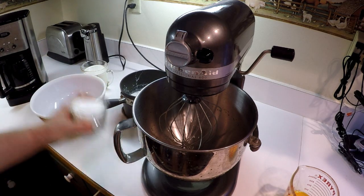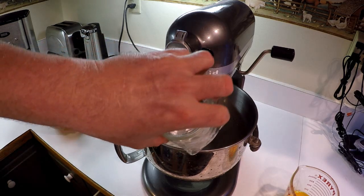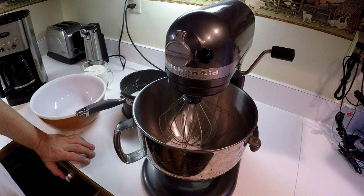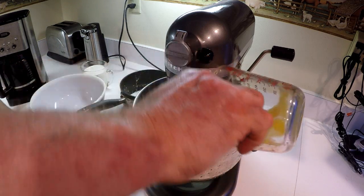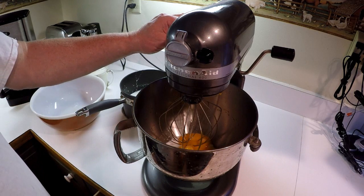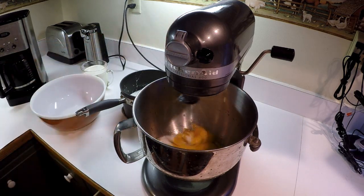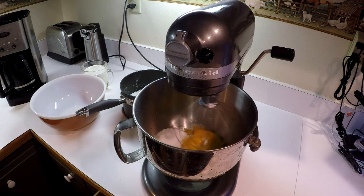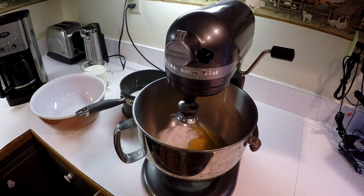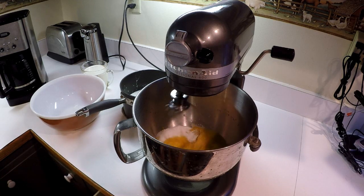And now we're going to put our sugar and our egg yolks in our mixer. We're going to put that on too. It doesn't take long, about 30 seconds or so.